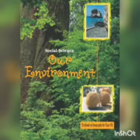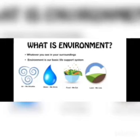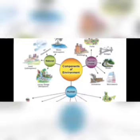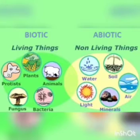In the last video lecture we covered Lesson 1 of Geography. We covered what is environment, why environment is changing over time, and the components of environment. In that, we talked about the first component — natural environment — in which biotic and abiotic were studied.